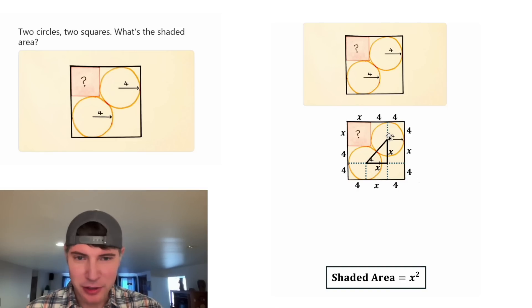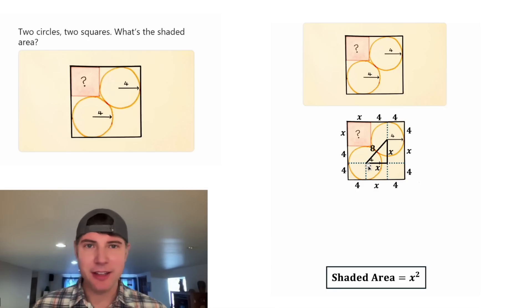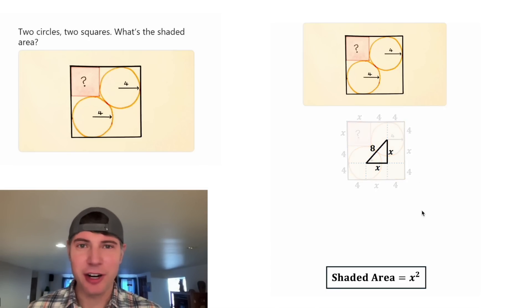And then the hypotenuse is going to be made up of this radius, which is four, plus this radius, which is four. So the whole thing is going to be equal to eight. And now let's focus on that triangle.